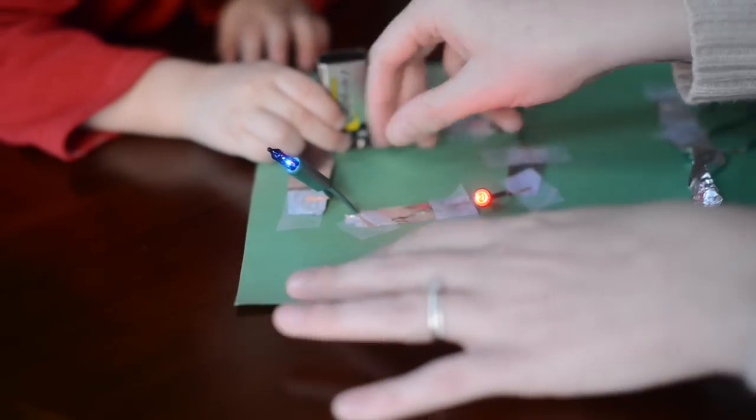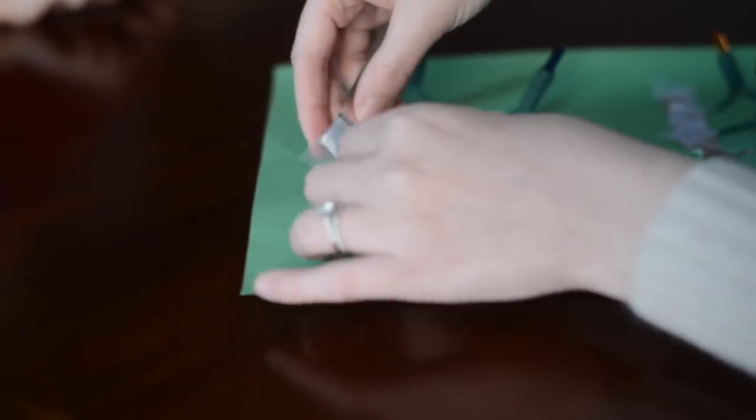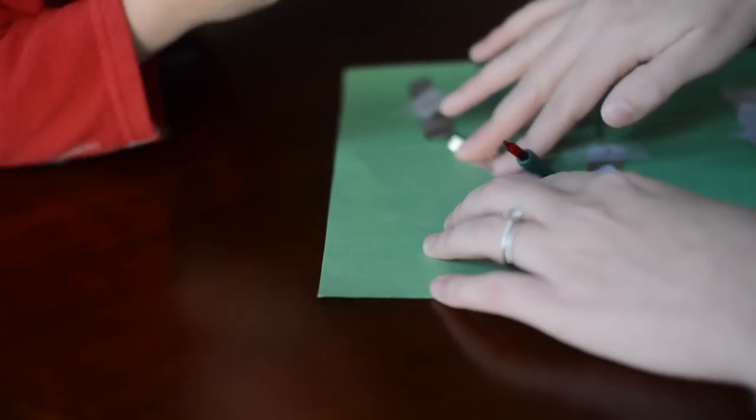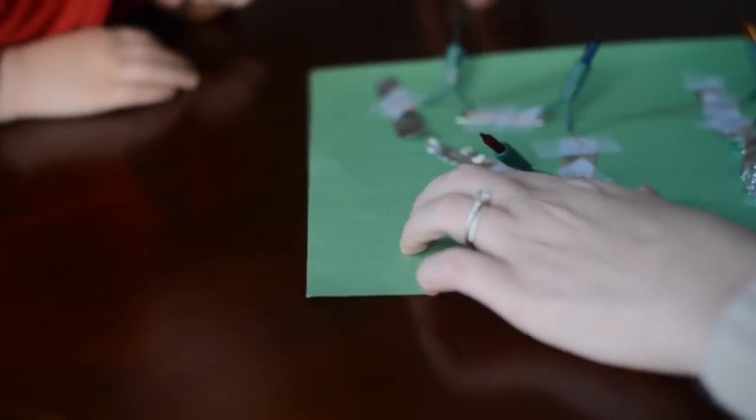Or you can create a series circuit like we have here. And we're using the nine volt battery with this. And then we wanted to see if we can make the lights brighter. So we took one of the lights out of the circuits and then reconnected the circuit to see if we can make the lights brighter. And we did.